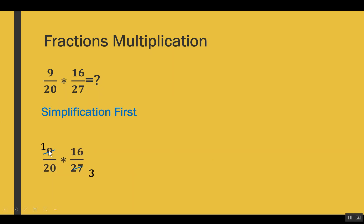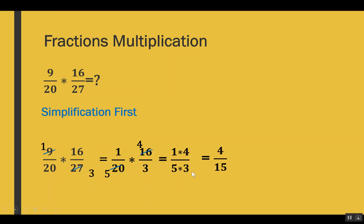After simplifying 9 and 27, we get 1 in the numerator and 3 in the denominator. Our new fractions are 1 out of 20 and 16 out of 3. Since 20 and 16 also have a common factor, we simplify them to get new numerators 1 and 4, and new denominators 5 and 3. Multiplying gives us 4 out of 15.